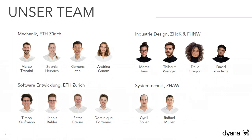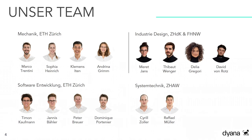Die erste Gruppe war für die Auslegung und Herstellung der Mechanik verantwortlich. Außerdem ist auch die Software, die nötig ist, um einen vierbeinigen Roboter zum Laufen zu bringen, mit sehr viel Arbeit verbunden. Dieser Herausforderung haben sich vier weitere Teammitglieder gestellt. Neben Mechanik und Software braucht es auch eine funktionierende Elektronik, mit deren Auslegung und Gestaltung sich unser Electrical-Team beschäftigt hat. Unsere vier IndustriedesignerInnen haben sich mit dem Charakter und dem Aussehen von Diana befasst.